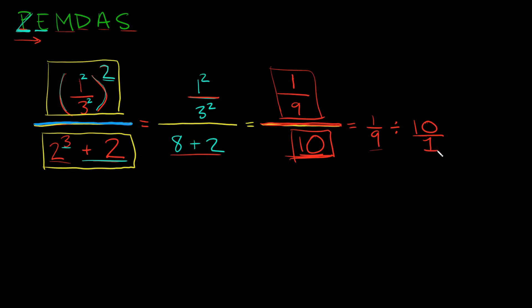Because ten over one is the same thing as ten divided by one, right? And what's ten divided by one? It's just ten. So now we have a fraction divided by a fraction. How do you solve that?